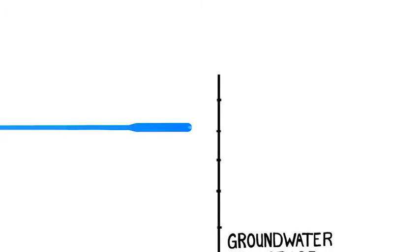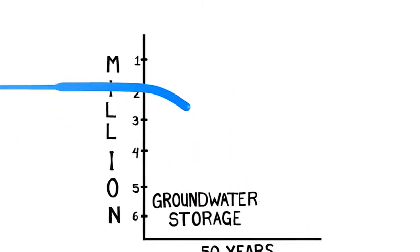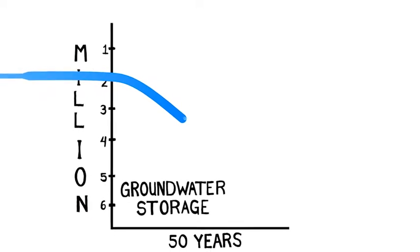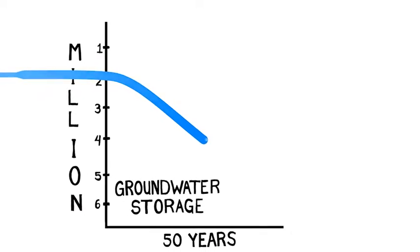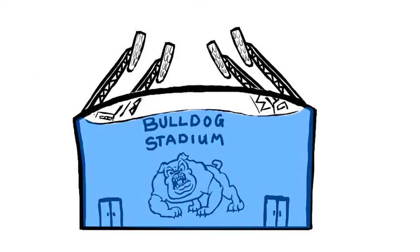The California Department of Water Resources estimates that over the past 50 years, the Kings Basin has experienced a decline of about 6 million acre-feet in groundwater storage. And local experts estimate groundwater storage is declining at an average rate of more than 120,000 acre-feet annually. That's enough to fill 250 Bulldog stadiums to the brim every single year.